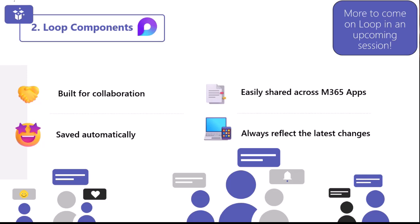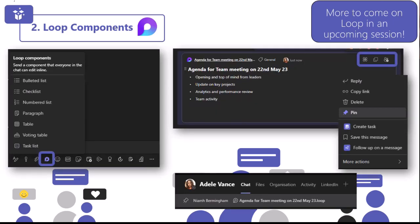Let's show you how you can actually use them. When you are in a chat message, if you look across the bottom along the messaging extensions, you will be able to click on the Loop icon. When you click on there, you will get a load of options to choose from — a bulleted list, a checklist, maybe a table, or even a task list. This can be really good for things like collaborating on agendas before meetings.